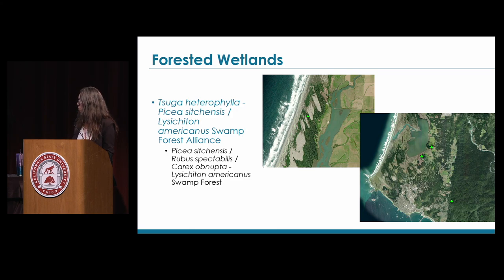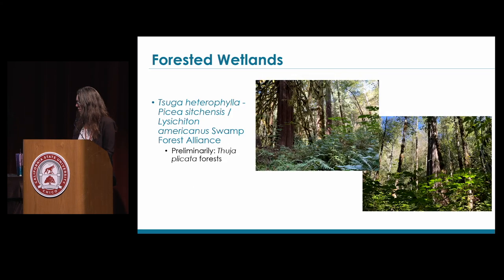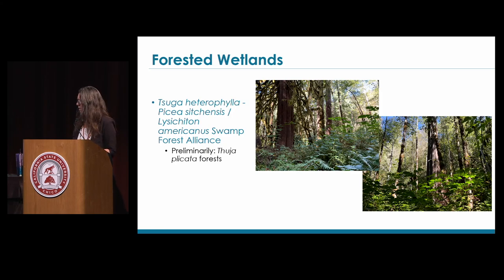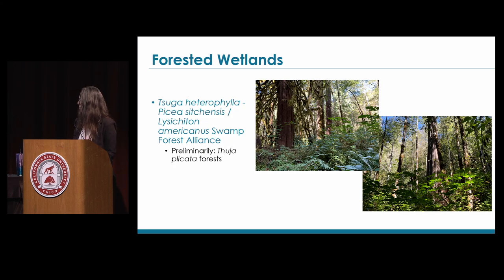Sometimes Western Hemlock becomes an important component of the overstory. The other association within this swamp alliance is Thuja plicata, or Western Red Cedar — a preliminary association with only three samples. It has a midstory of red alder, an understory of Salmon Berry, and scattered Cascara Buckthorn and Elderberry. We found this in terraces and mountain drainages adjacent to the coast.